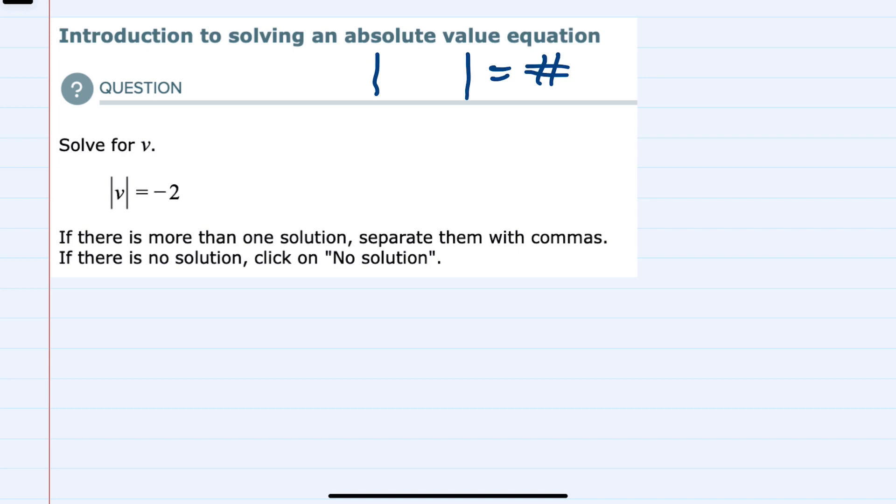For these problems there are two possibilities. If we have an absolute value equal to a positive number, then we would have two solutions. One where we would drop the absolute value and set what is inside equal to the positive number, and the other where we would drop the absolute value and set what's inside equal to the opposite of that number.